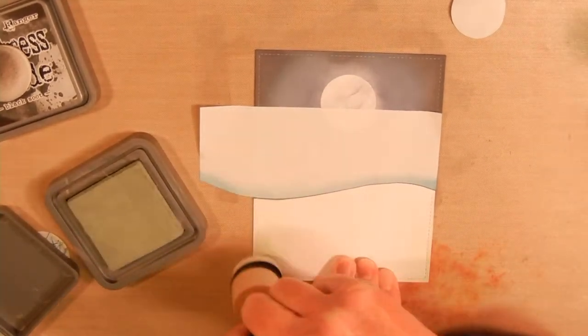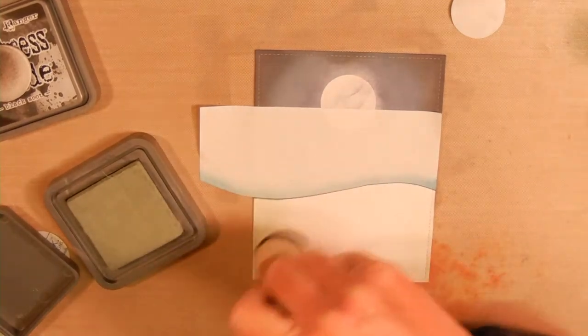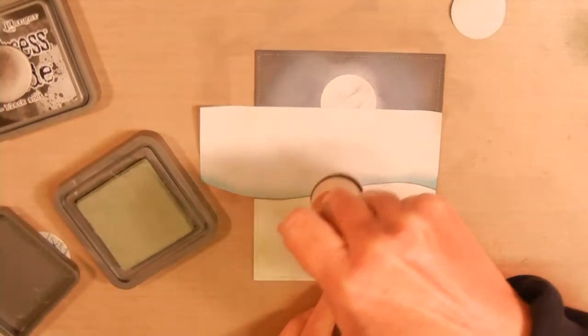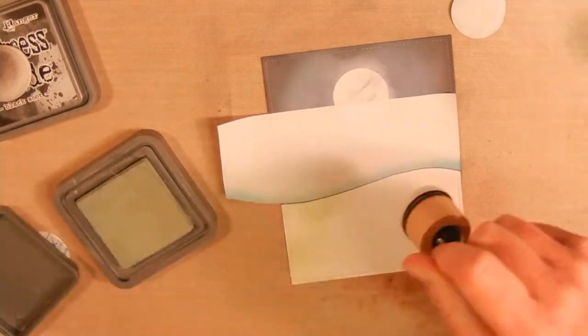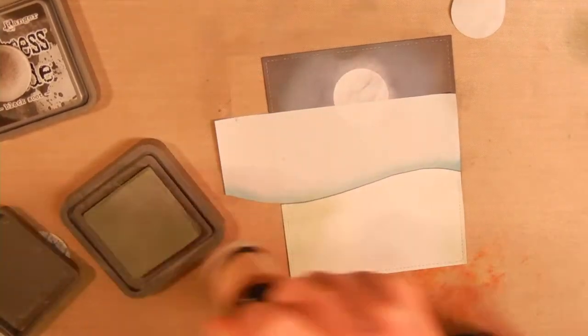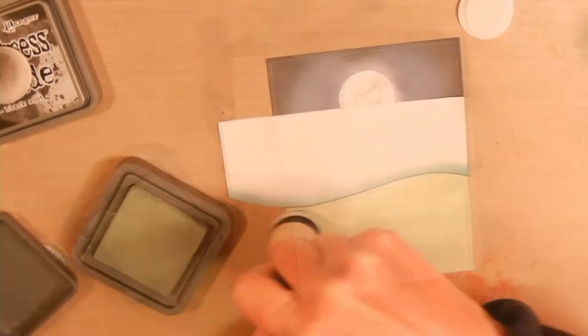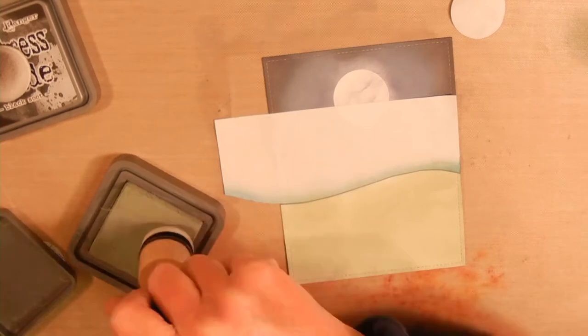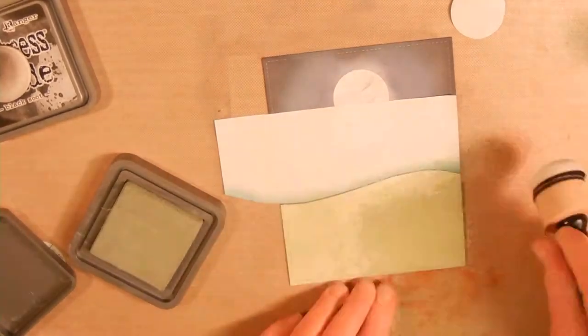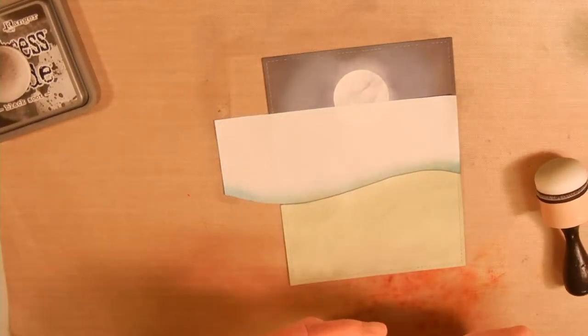I didn't have the same green colors that Natalie had, so I use bundled sage for my grass and then I go over that in pine needle. But the pine needle is dark but a little bit too bright, so then I went over that a little bit with black soot so that I have more of a nighttime appearance.